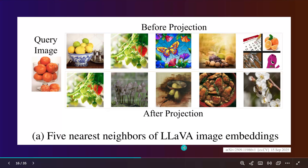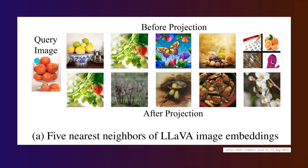Let's look at LLaVA image embeddings. We have a query image embedded in a projected mathematical space close to certain neighbor images before the projection. But after the mathematical operation maps it into the space where the language representation is dominant, the image is now close to completely different images. Some images overlap, but there are completely new images — like some mushrooms — that were not represented in the original epsilon environment of the visual embedding.